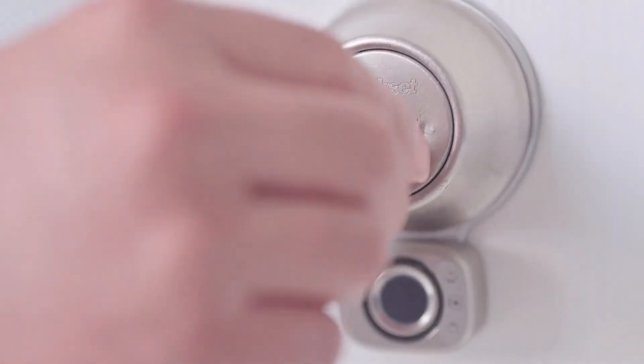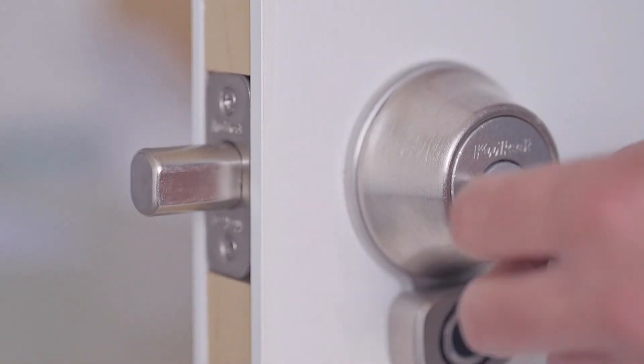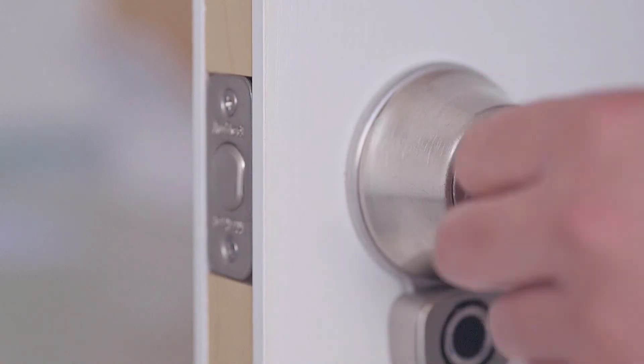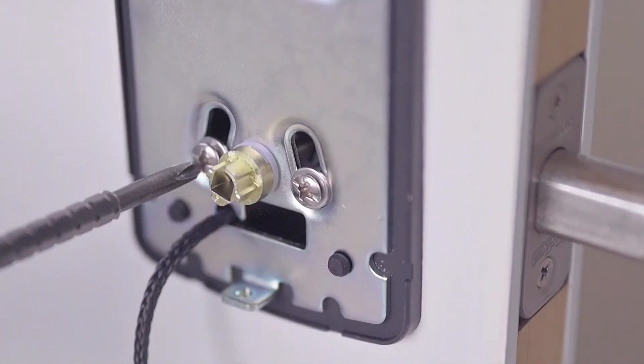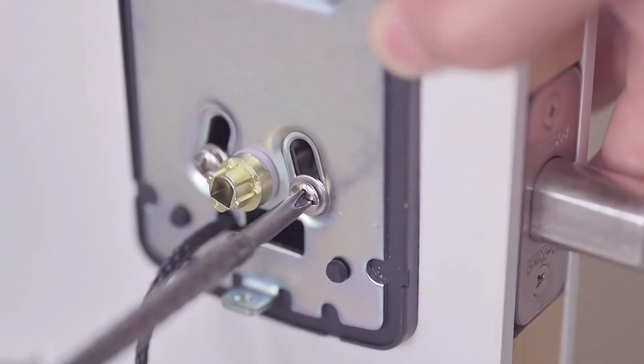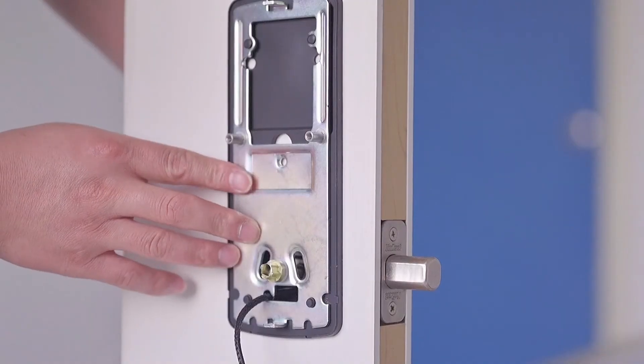Using the key for your deadbolt, test locking and unlocking to ensure smooth operation. If there is binding or resistance, loosen the backplate mounting screws and adjust plate alignment with spindle/torque blade to alleviate any misalignment that may be causing the issue.